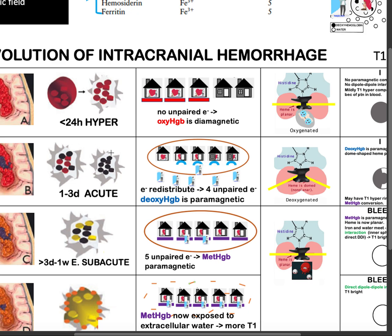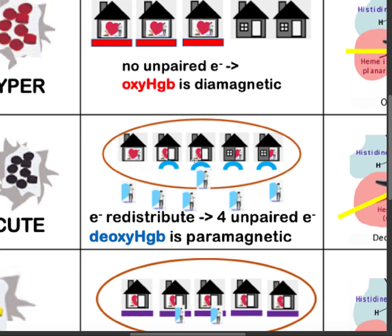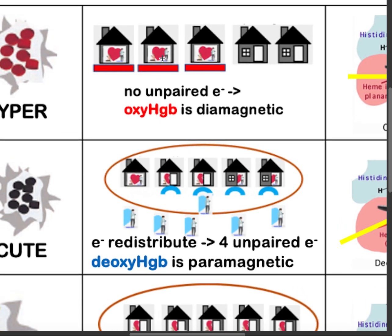In the acute stage, when hemoglobin loses oxygen, the electrons will redistribute. From the configuration two, two, two, it will become two, one, one, one, one — a total of six electrons, but four of them are unpaired. Therefore, deoxyhemoglobin is paramagnetic.